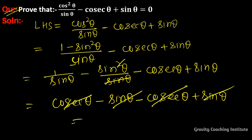The sinθ and -cosecθ terms cancel away, so this equals 0, which equals RHS. Hence proved.